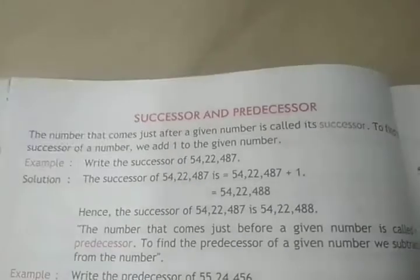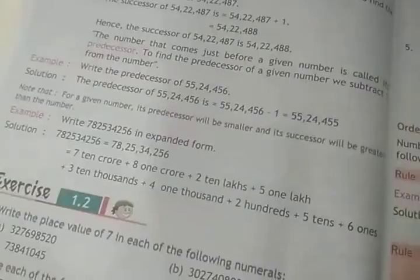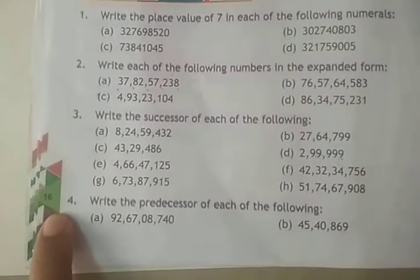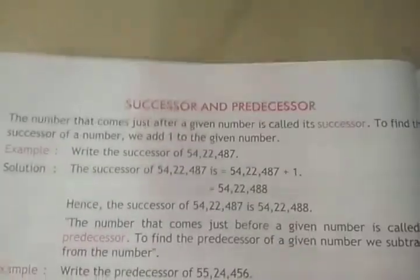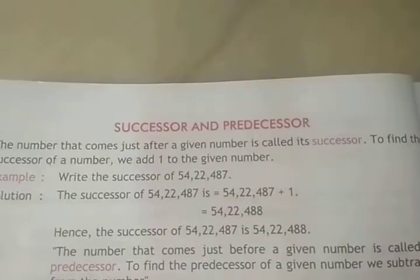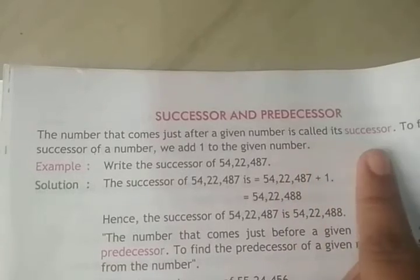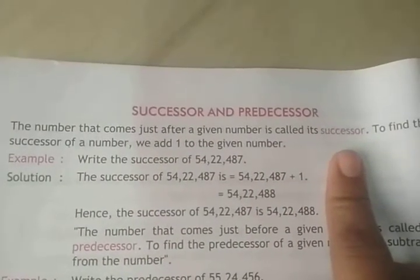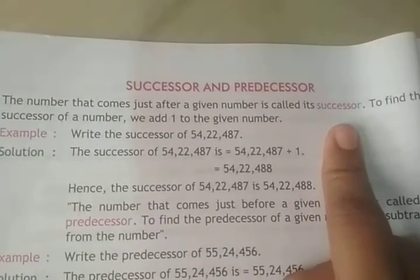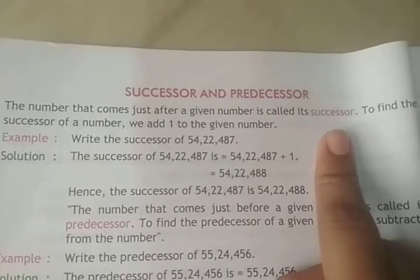Successor and predecessor, page number 15 to 16. The number that comes just after a given number is called successor. When we get the next number, we call it successor.